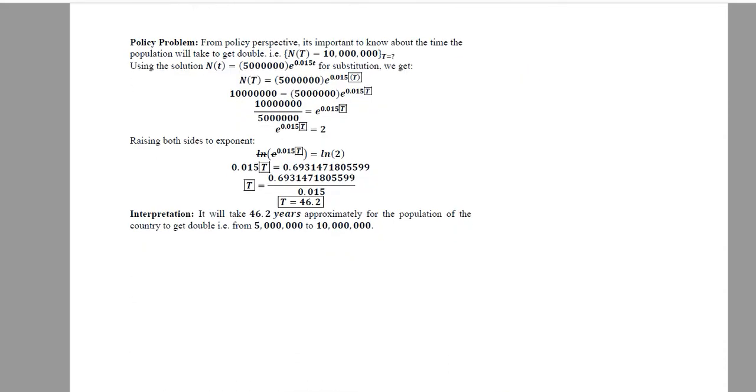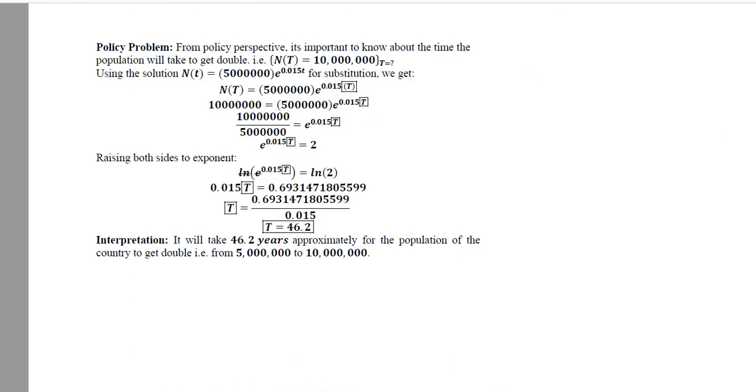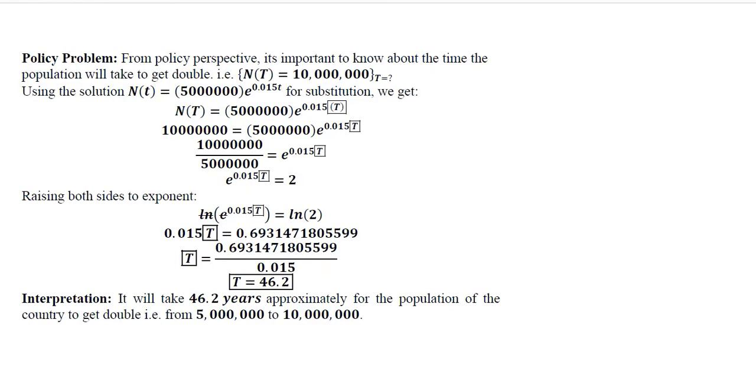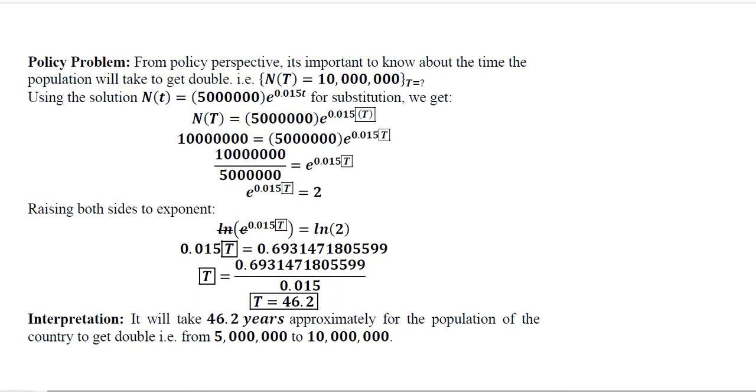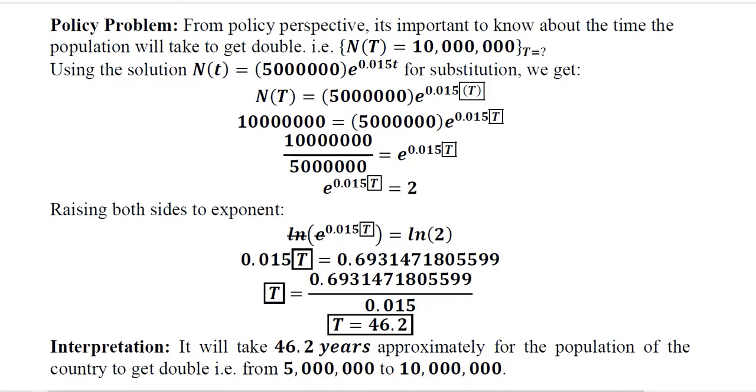We can also do a policy problem from the information we have found in the form of the time path. Since the population variable is significant when it comes to policy making, we have the question: when will the population reach this certain level? What will be the time at that stage? Time is to be found, whereas we are given the level of population.